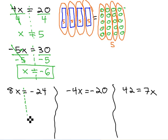When we have 8 times x, or 8 groups of x, we split into 8 individual groups on both sides. The 8's divide out, and in each group, we're left with negative 3.